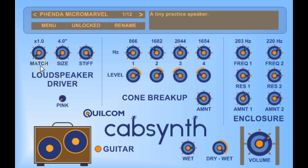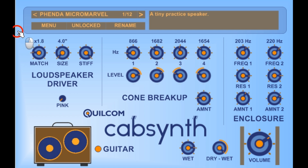The match knob sets the matching between the amplifier and the loudspeaker, so at times one it's a perfect match, so 50-watt amplifier into a 50-watt speaker, and as you increase this, the speaker gets driven harder against its suspension limits.